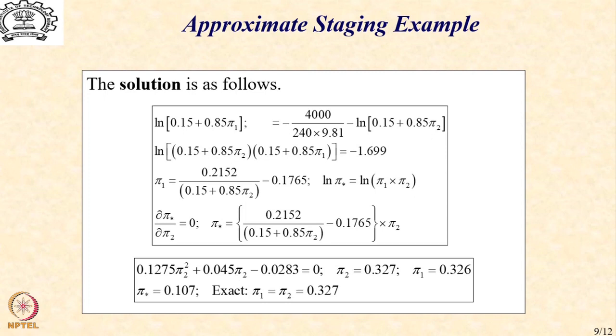I have not mentioned the inconsistent solution but I am mentioning the consistent solution and you immediately see that the pi 2 turns out to be 0.327. And correspondingly if I take this pi 2 and substitute into my constraint solution of pi 1, I get pi 1 as 0.326. And you realize that I have got an exact solution. The exact solution for this problem through the Lagrange multiplier method was 0.327 for both the stages. Here you can see there a marginal leakage possibly because of the truncation error in the decimal places.